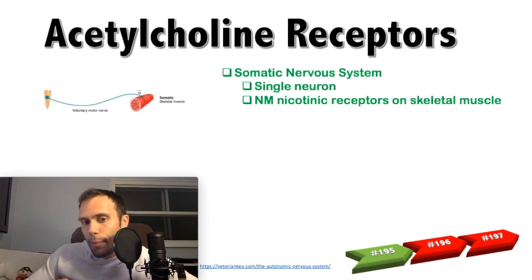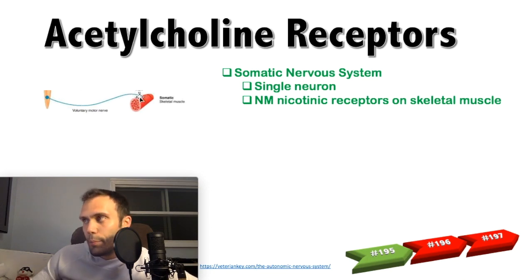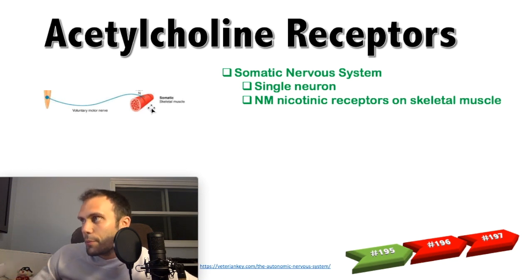Let's look at the somatic and autonomic nervous systems and how they use these neurotransmitters and receptors. In the somatic system, we have our spinal cord and a voluntary motor nerve — just one single nerve going from the spinal cord to skeletal muscle. It synapses at a nicotinic receptor, the ionotropic receptor directly linked to ion channels, using acetylcholine as its neurotransmitter. This is an NM nicotinic receptor.